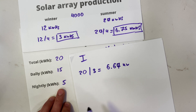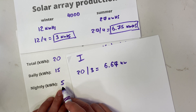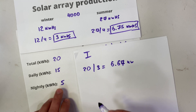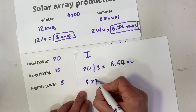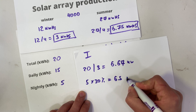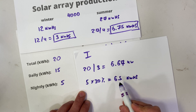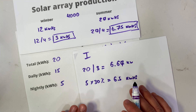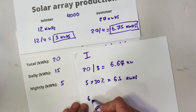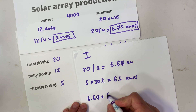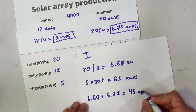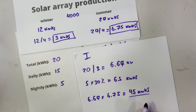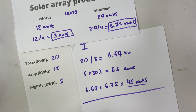For battery size, we need to cover 5 kilowatt hours of nightly usage. I recommend upsizing your battery by at least 30% to handle cloudy or rainy days, though 300% is better for extra capacity. At minimum, 5 kilowatt hours multiplied by 1.3 gives us 6.5 kilowatt hours of battery storage. In summer, this 6.67 kW array will produce about 45 kilowatt hours per day (6.67 × 6.75).